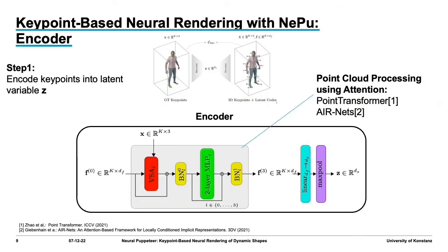The first part of our model encodes 3D keypoints in the latent variable Z, using methods from deep learning on point clouds. Namely, we rely on the vector self-attention operator proposed in point transformer. From a high-level perspective, the vector self-attention mechanism facilitates information exchange between nearby keypoints, and therefore serves a similar purpose as convolutions in CNNs.